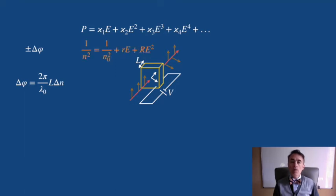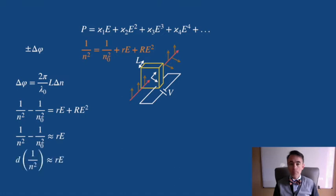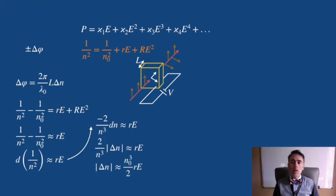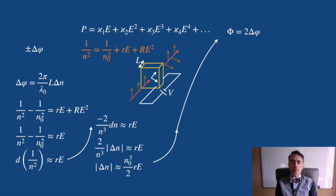By using the equation of the nonlinear index of refraction, neglecting the E squared term, back into the total phase difference of the light emerging from a crystal, capital Φ equals 2 delta phi.